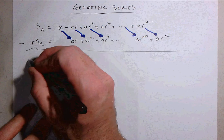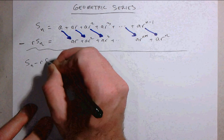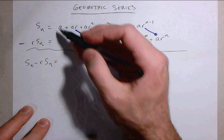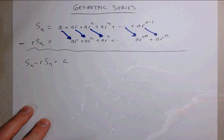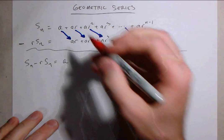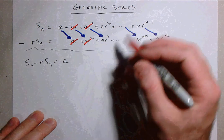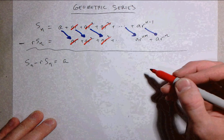When we subtract, on this side we get s sub n minus r times s sub n. On this side what do we get? Well, we get a, but now a r minus a r is 0. a r squared minus a r squared is 0. a r cubed minus a r cubed is 0. And so on.